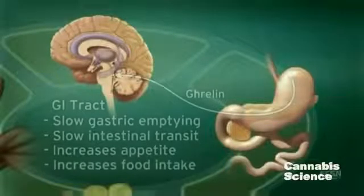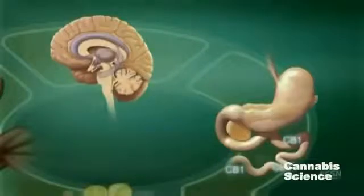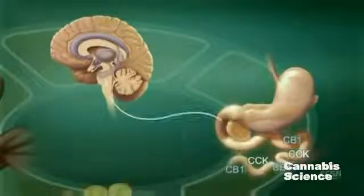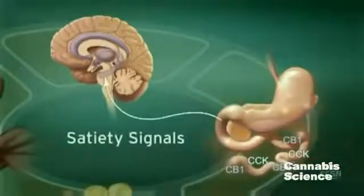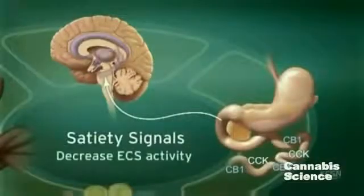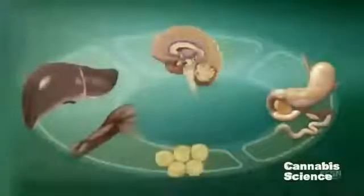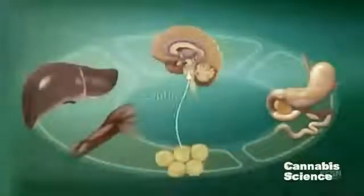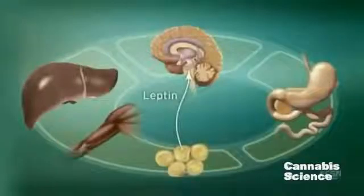After eating, cholecystokinin in the duodenum triggers satiety signals. Subsequently, ECS activity is decreased through suppression of CB1 expression. An increase in the adipokine hormone leptin decreases endocannabinoid levels in the hypothalamus and decreases food intake.